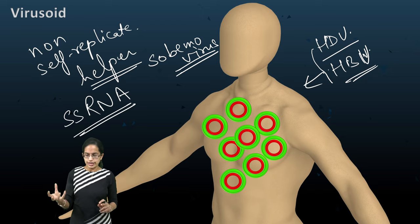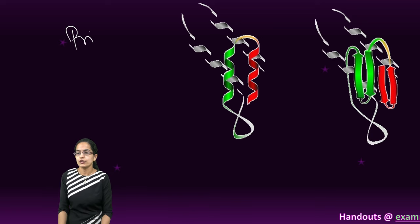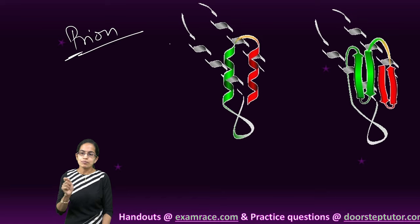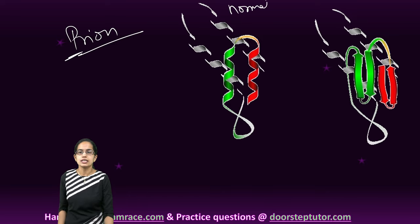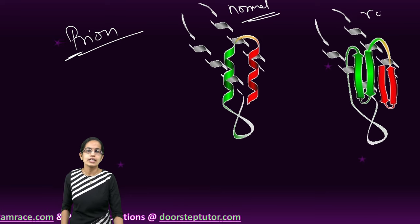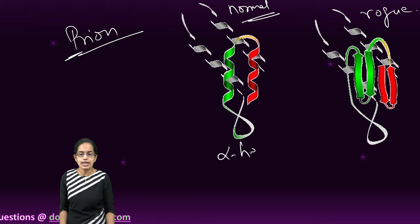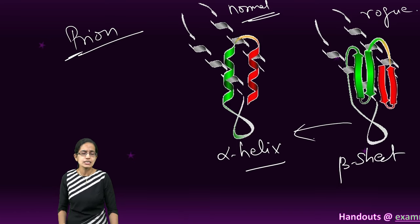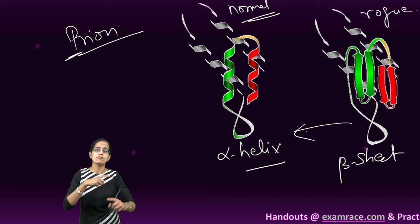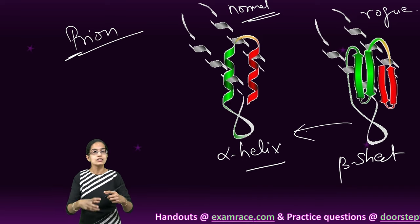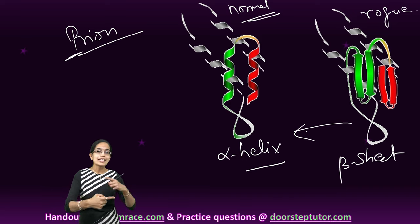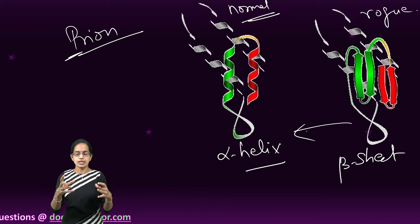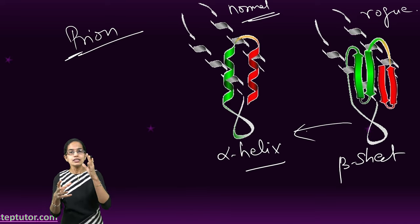Coming on to the last is the prions. Prions: P for proteinaceous. The idea is the normal protein structure is actually misfolded in the rogue protein structure. So the alpha helix, which is normally there, is changed into beta sheet. Slowly and gradually, these beta sheets try to damage the alpha helix further, and this triggers the normal protein to further get into abnormal folds or create beta sheets.